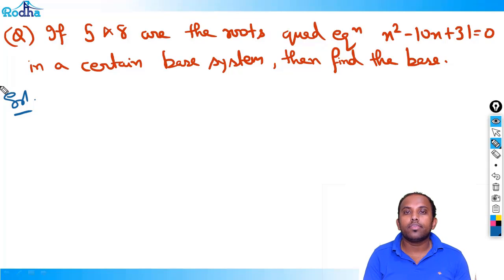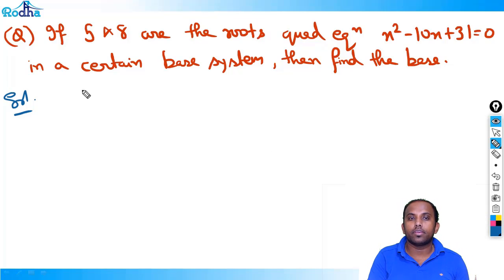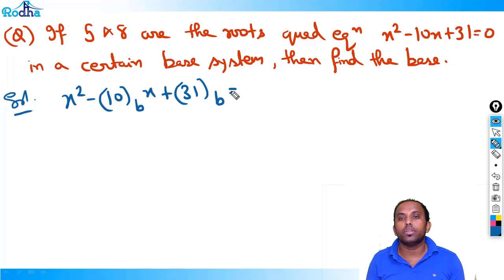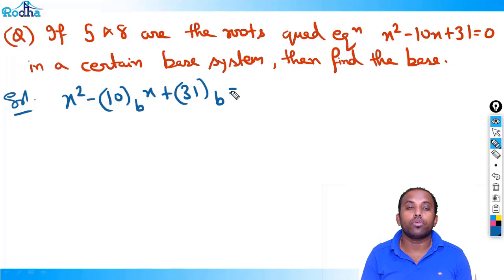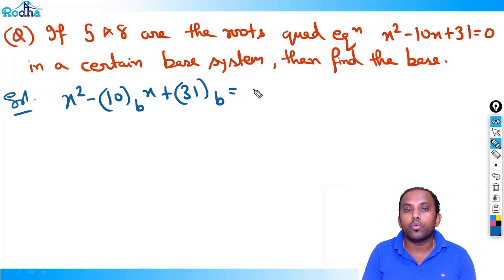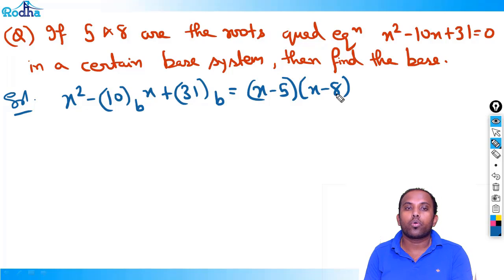Let's solve it. The x², 10x, and 31 are in a different base. Let's assume the base is B. So x² - 10B·x + 31B = 0 in base 10. If 5 and 8 are the roots, then x-5 and x-8 are factors. The original quadratic equation is (x-5)(x-8).